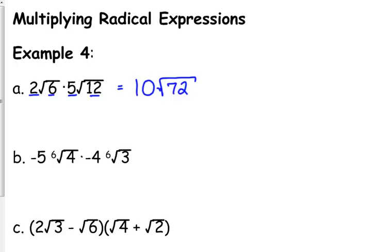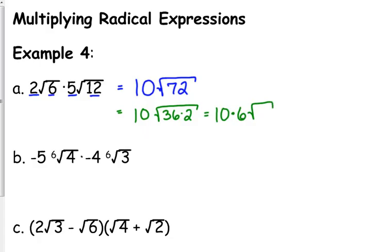Then we want to simplify what's under the radical. 72 would be 36 times 2, which is 10 times 6 times the square root of 2, which gives us a final answer of 60 times the square root of 2.